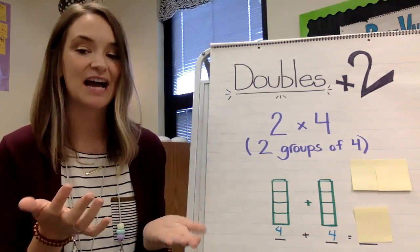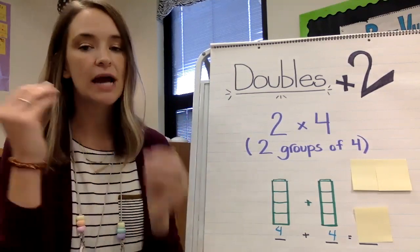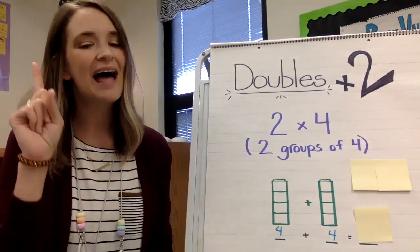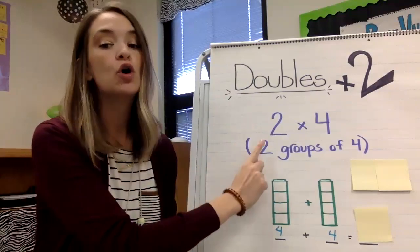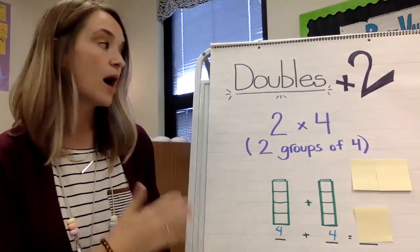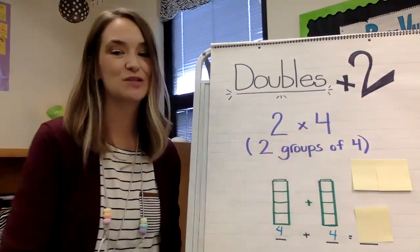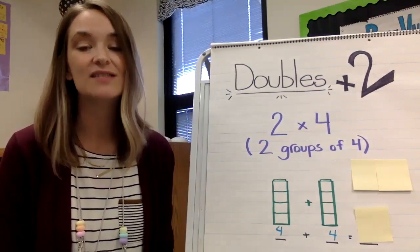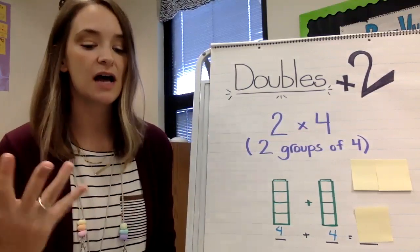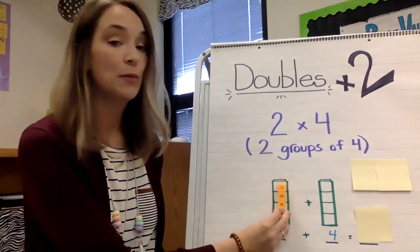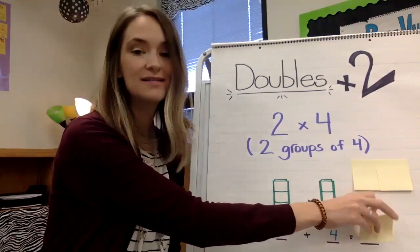So our double strategy of times two — we are going to use the example of two times four. When I have two times four, I want you to think: whenever you see a multiplication problem with times two, think of that as two groups of whatever your other number is. So for this problem, two times four, I have two groups of four. Whenever I see that multiplication symbol, instead of saying 'times,' I'm going to say 'groups of.' So for this problem, I have two groups of four — a group of four here and another group of four here. So four plus four equals eight.